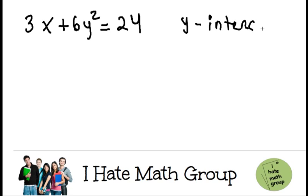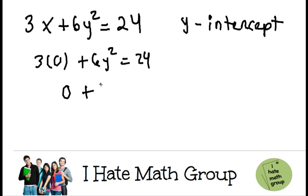Now remember, any time you want to find the y-intercept, you're going to make x equals 0. So you're going to have 3 times 0 plus 6y squared equals 24. 3 times 0 is just 0, so 0 plus 6y squared equals 24.